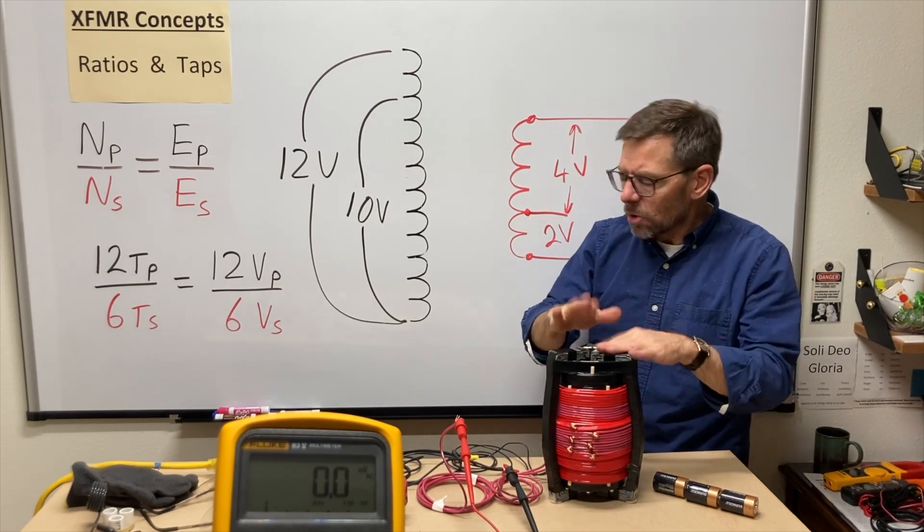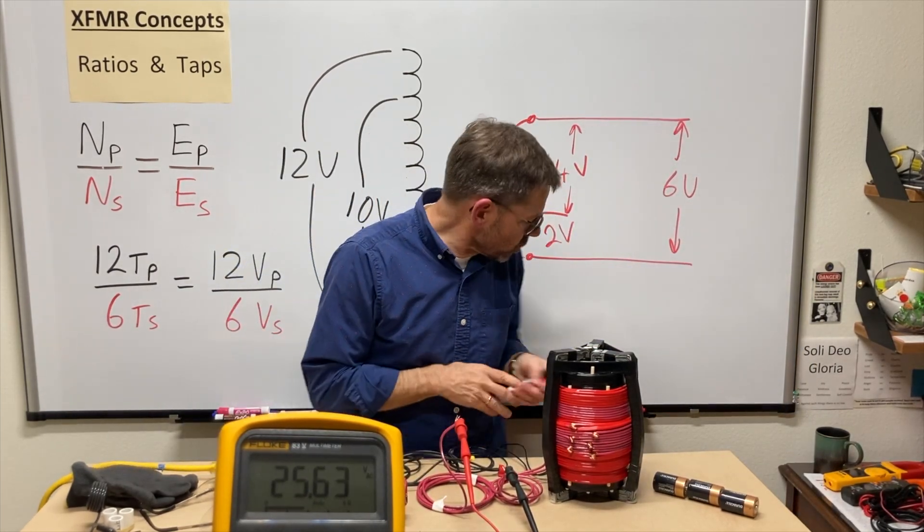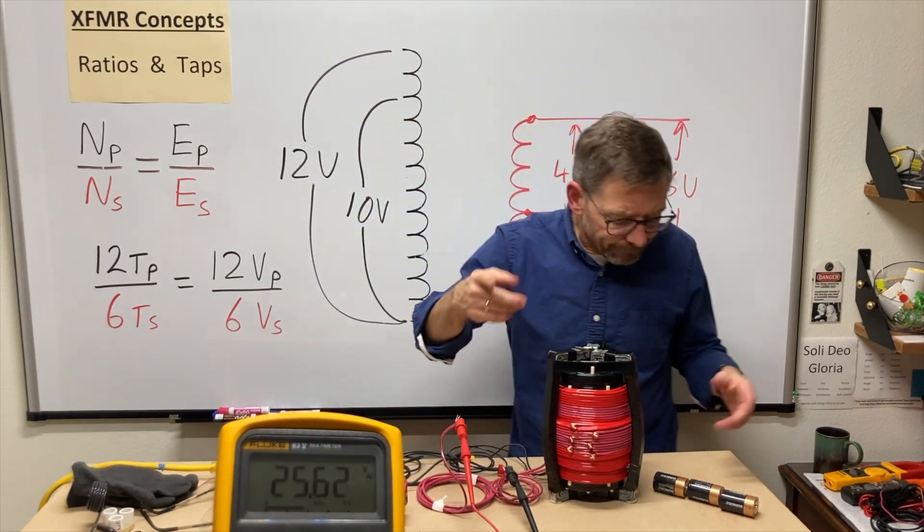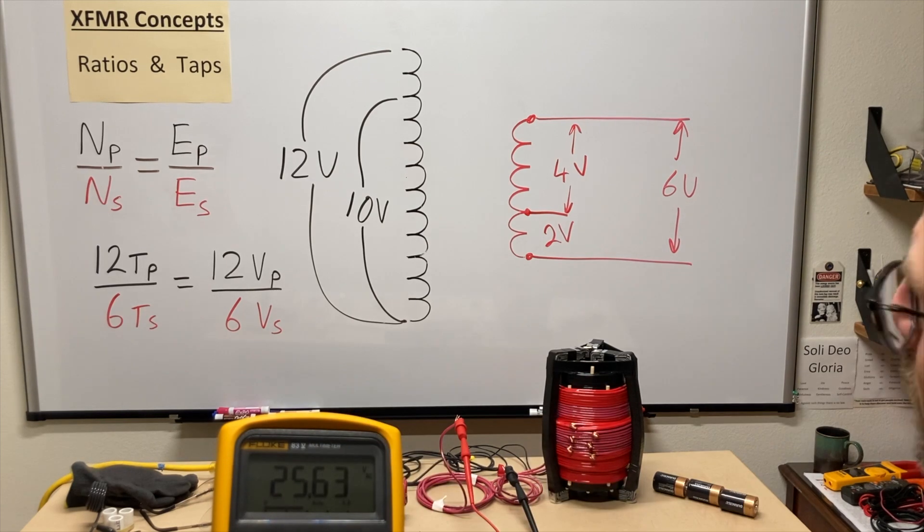Okay, so let's go ahead and turn this back on again. Turn that on. 120 volts, plus or minus. And what do we have here right now? 25.6.